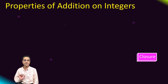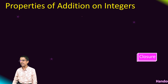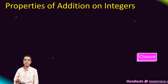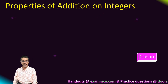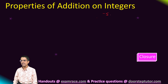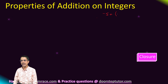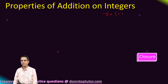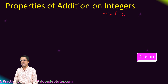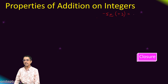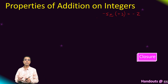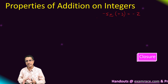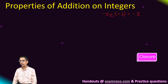The first and most basic property is the closure property of addition of integers. What does that mean? It means that if I take any two integers, let's say minus 5 and plus 3, and I do an addition over those two, then my answer would necessarily be an integer.